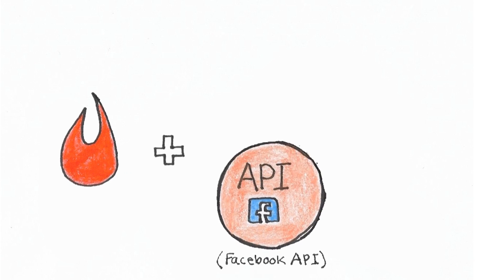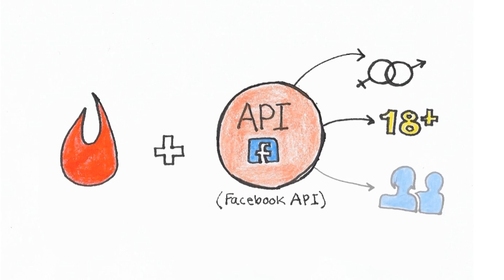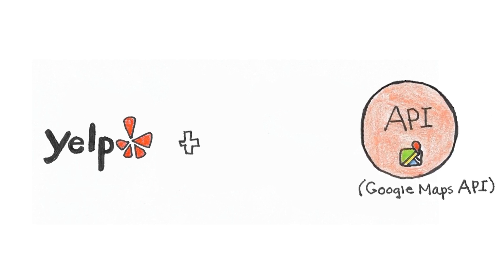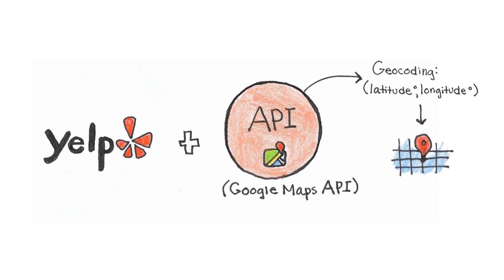Another example: Tinder uses a Facebook API to access valuable user information like gender, age, and mutual friends. It also allows users to create an account through Facebook in just one tap. Similarly, Yelp uses a Google Maps geocoding API to convert restaurant addresses into geographic coordinates, which can then be placed as markers on a map.